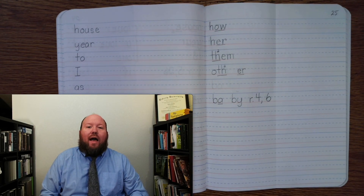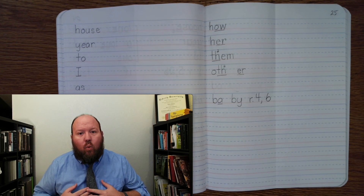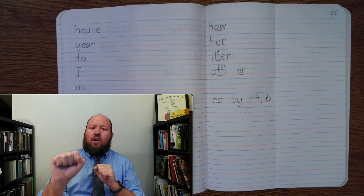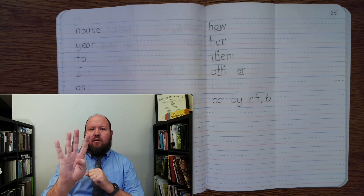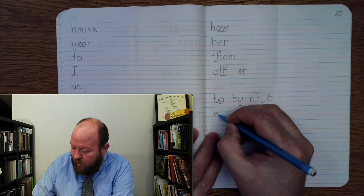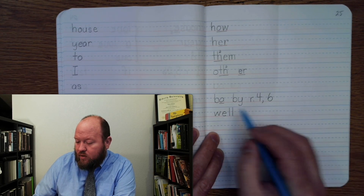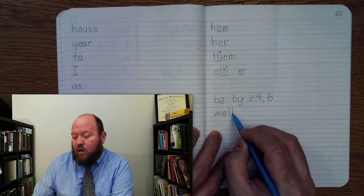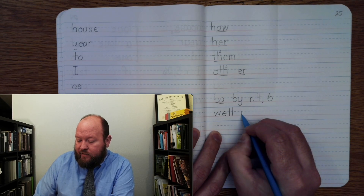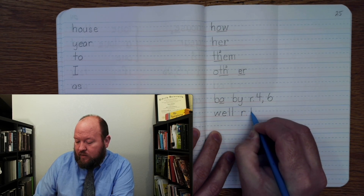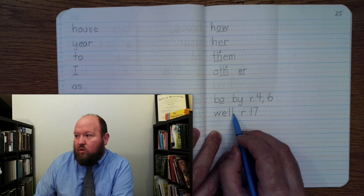The next word is well — like, I get water from the bottom of the well, or how do you feel? I feel well. Base word: well. Wuh-ay, luh-ul. Well. Write well. Wuh-ay, luh-ul. Remember there's a rule here — Rule 17. Words that end in L often double.